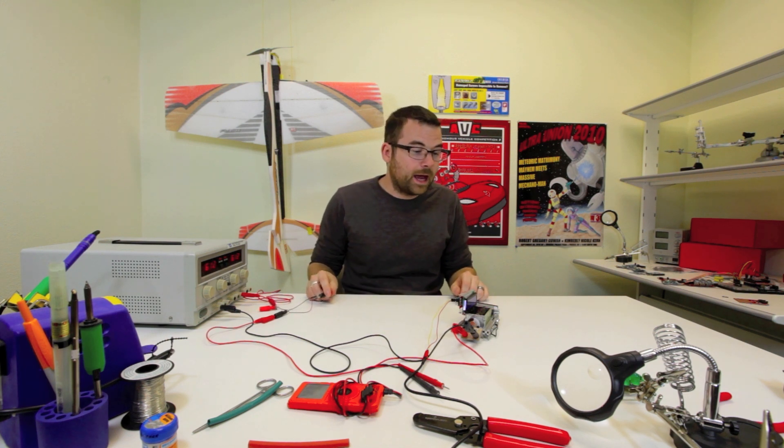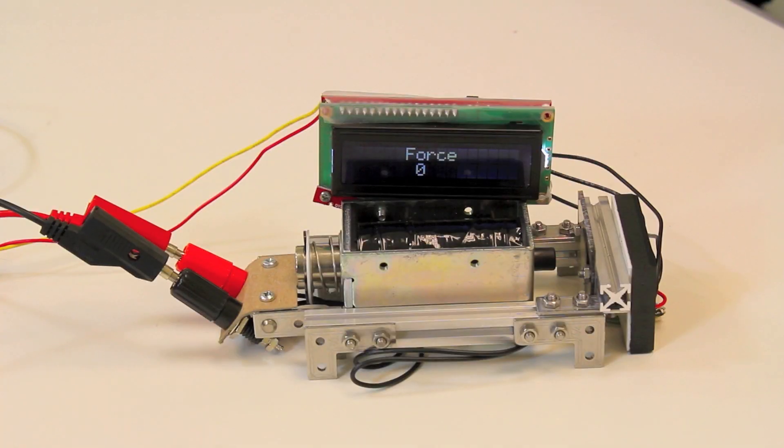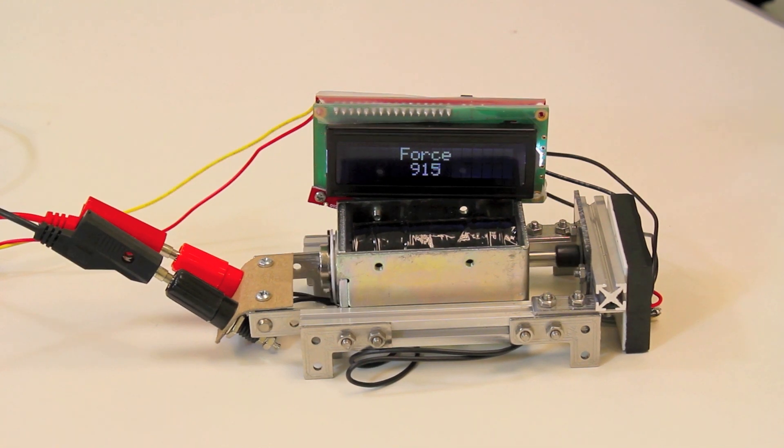However, if we crank this up to max, you can see that this solenoid has quite a bit of force behind it. Right now we're about 36, 37 volts, and it has a lot of force behind that, and we're almost maxing out the force gauge.